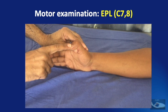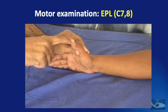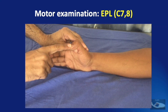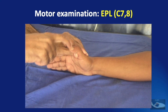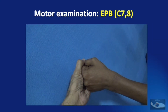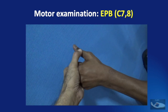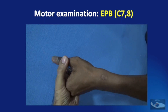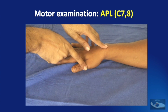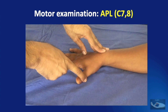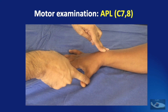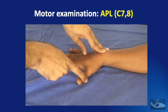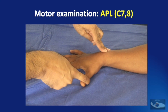To test extensor digiti minimi, the patient makes a closed fist and extends only the little finger. To test extensor indicis proprius, the patient makes a closed fist and extends only the index finger. The extensor pollicis longus is tested by supporting the proximal phalangeal region of the thumb and asking the patient to extend the interphalangeal joint, with resistance offered at the terminal phalangeal region. To test extensor pollicis brevis, the patient extends the metacarpophalangeal joint of the thumb with resistance at the dorsal aspect of the proximal phalanx. When testing abductor pollicis longus, the patient keeps the hand flat on the table and abducts the thumb at the carpometacarpal joint, with resistance at the metacarpal region.